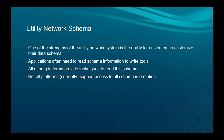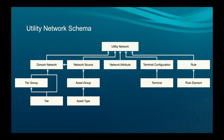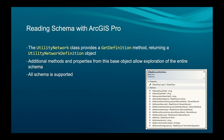All platforms provide techniques to read the schema, though there are some limitations. The class diagram shows the full span of information available — network sources, asset groups, asset types, and more. In Pro, you start with the utility network class; there's a get definition method that returns a utility network definition object, from which you can drill down into all the different schema options.